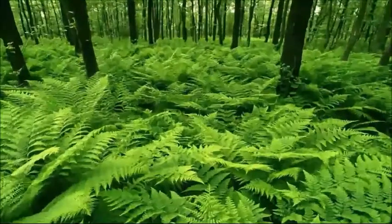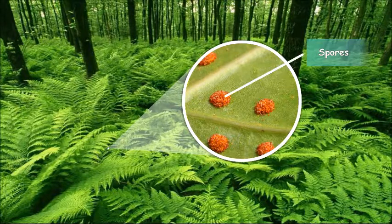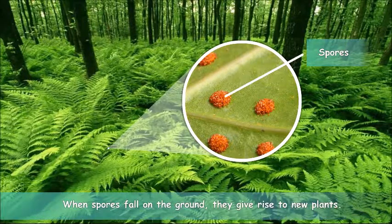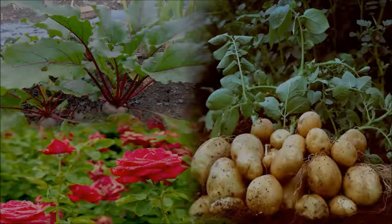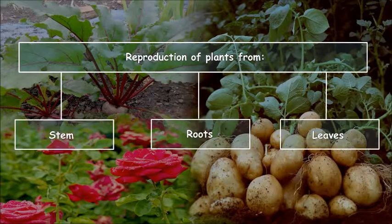These plants produce tiny, powder-like, round bodies called spores. Reproduction in these plants takes place through spores. Spores are present on the lower surface of the leaves. When they fall on the ground, spores give rise to new plants.